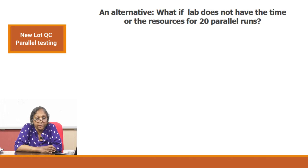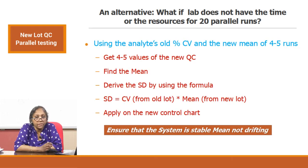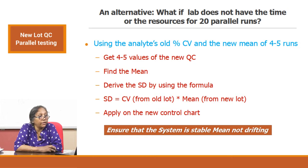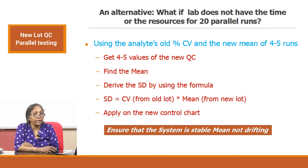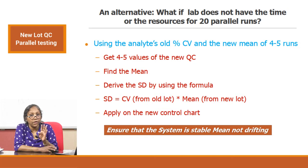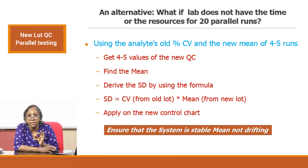There is an alternative to 20 runs. Some exceptional situations — like hematology controls or very labile controls — may not have the shelf life to afford a 20-run calculation. In this case, you can use the CV percent from the old lot and the mean from the new lot. Analyze the new QC 4 to 5 times, find the mean, and derive the standard deviation using the formula. With only 4 or 5 runs, you will not capture the inherent variation, giving you a very narrow SD — which leads to unnecessary false rejections.